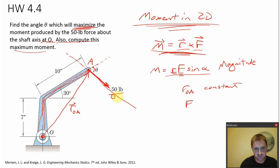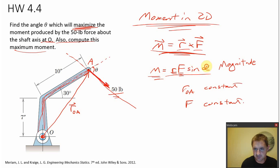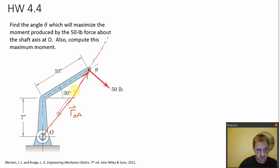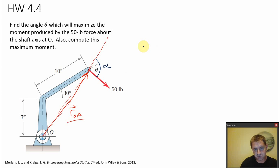What about the force F, that 50-pound force? That's constant as well. So what changes the moment? Only angle alpha — the angle between the R and the F vector. If I continue the R_OA vector, the angle alpha is the angle between this force vector and the line of action of R_OA. Since R and F are both constant, only alpha changes the moment.